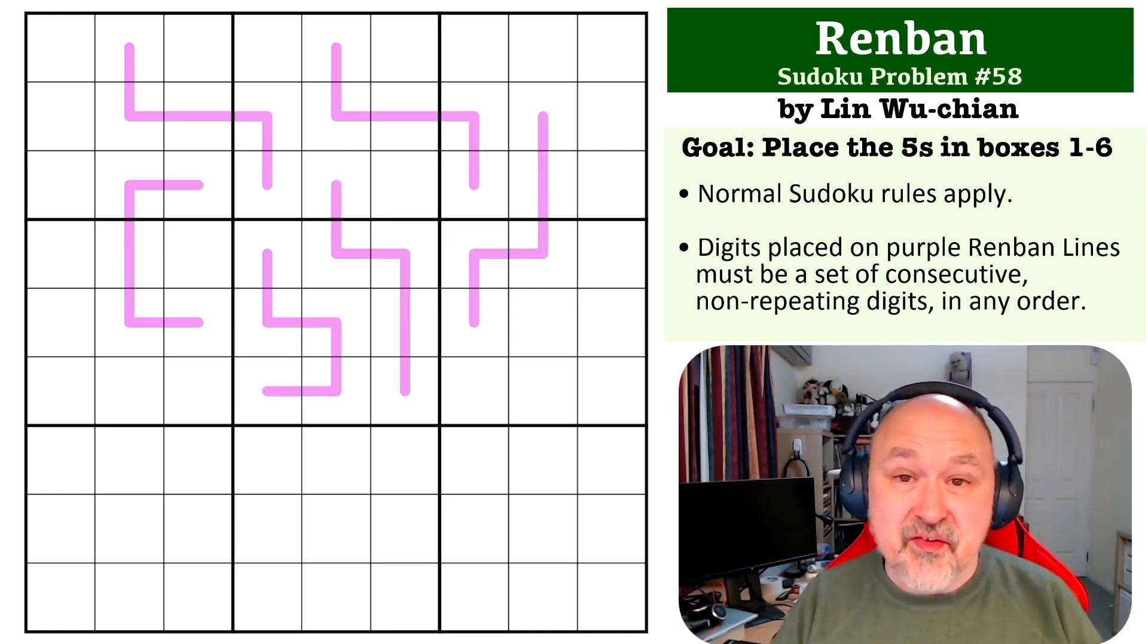The goal with this one is not to place digits where the x's are, it's to find out where all the fives go in boxes one to six. This is a Renban problem, as I said.